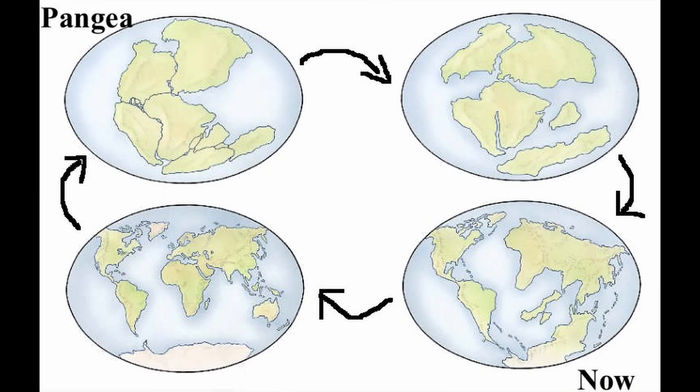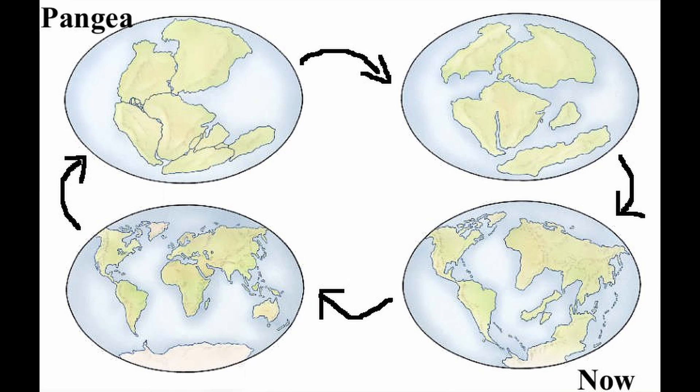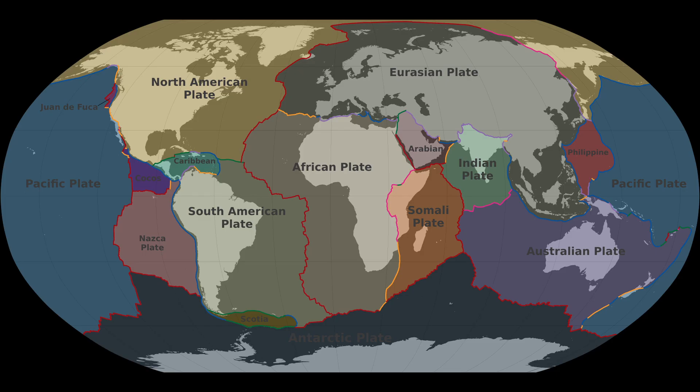Today, we think the continents just kind of float around on Earth because of tectonic plates. We don't really understand it, but we figure the numbers should work out. It's pretty hard to measure since the plates are big and they move slow.